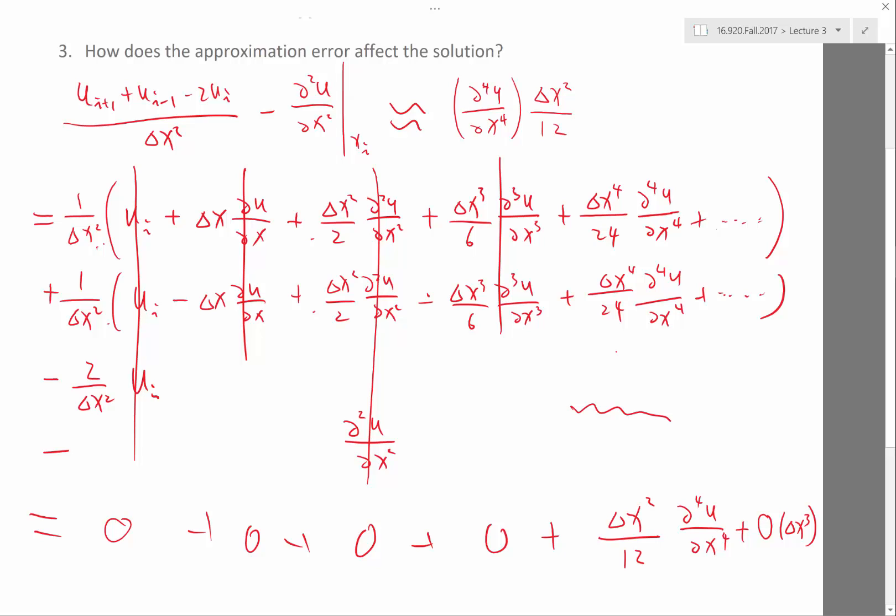How much do you think I have decreased the error in the finite difference approximation? A factor of 10? 100, right.